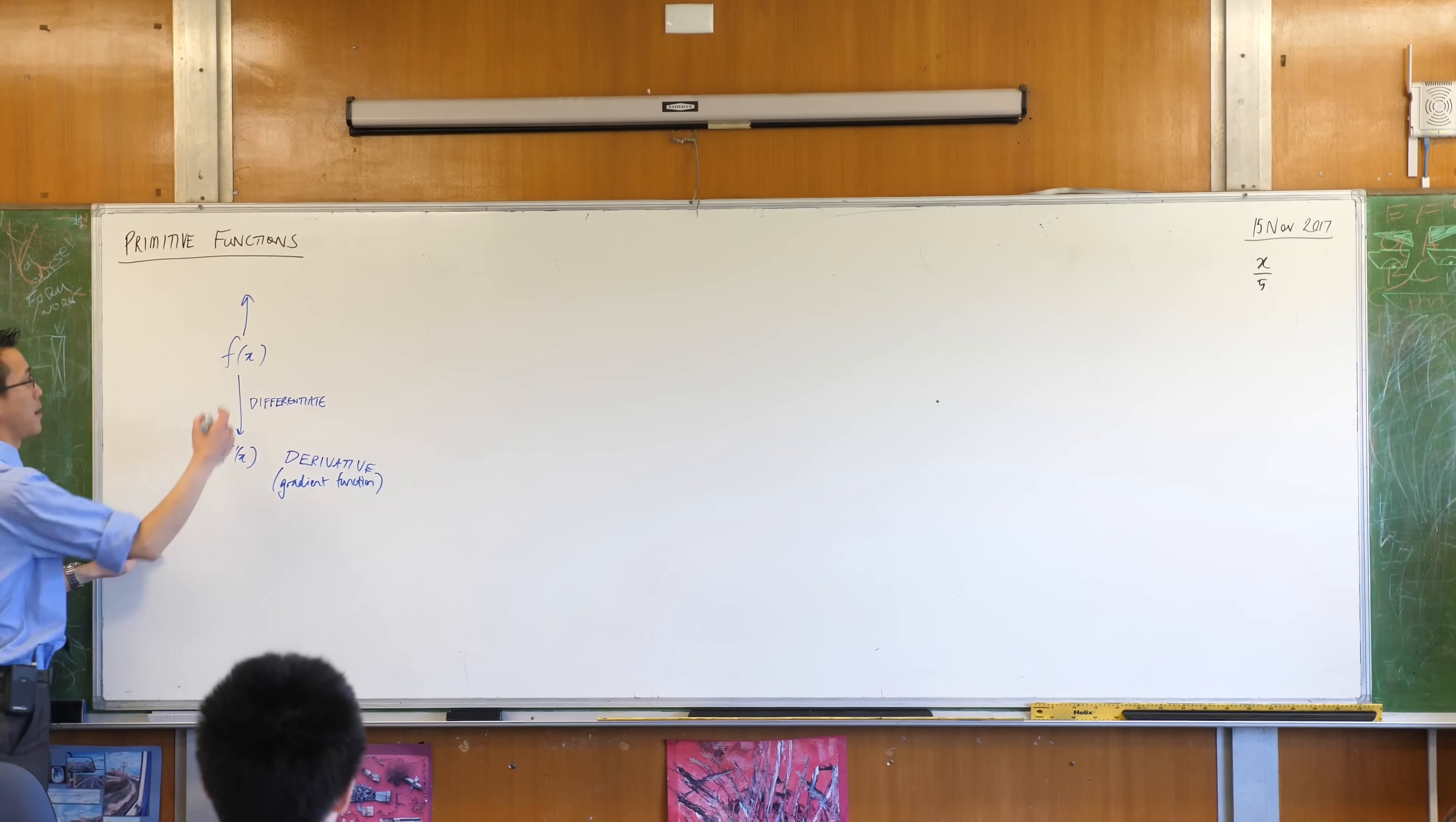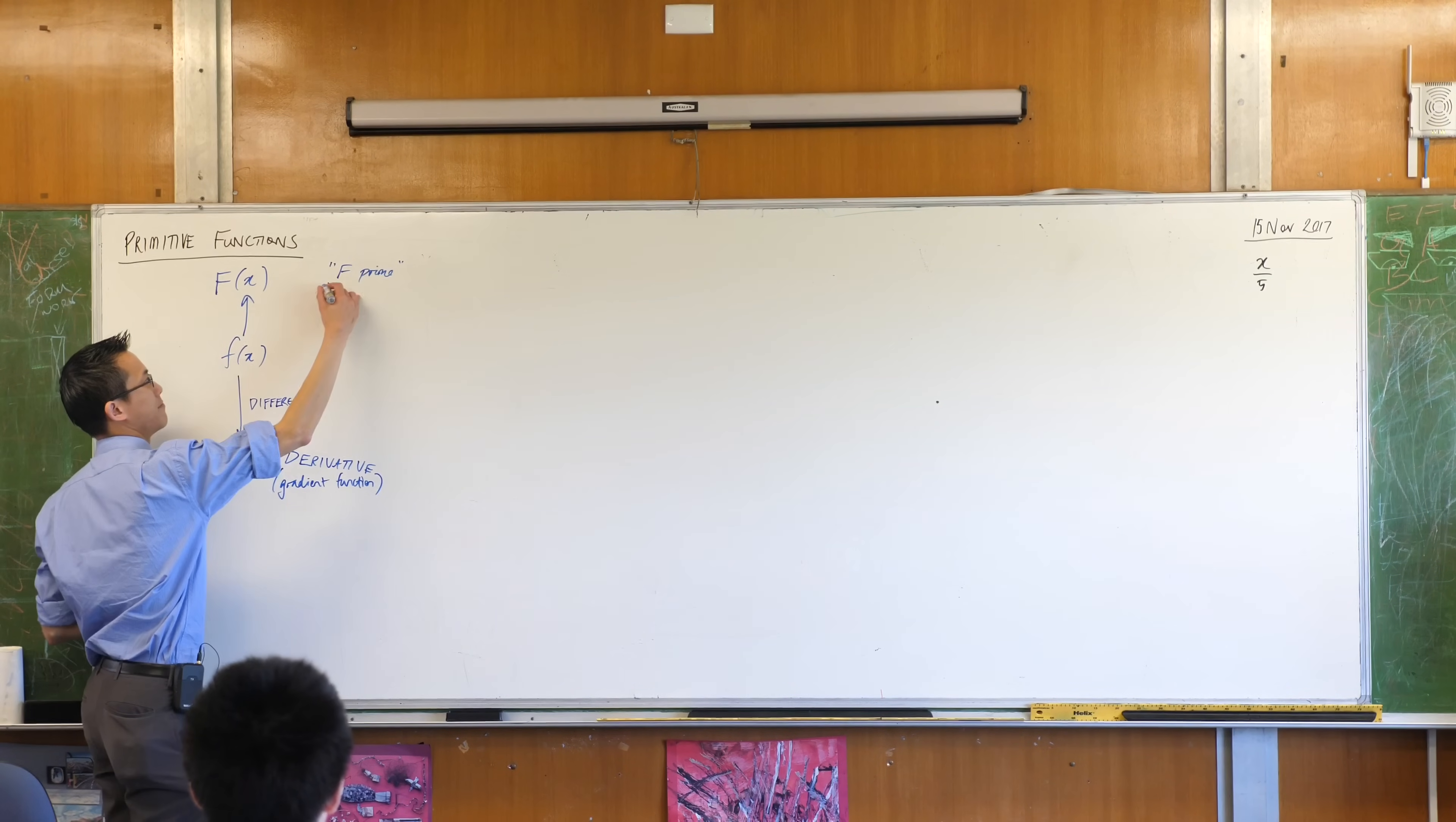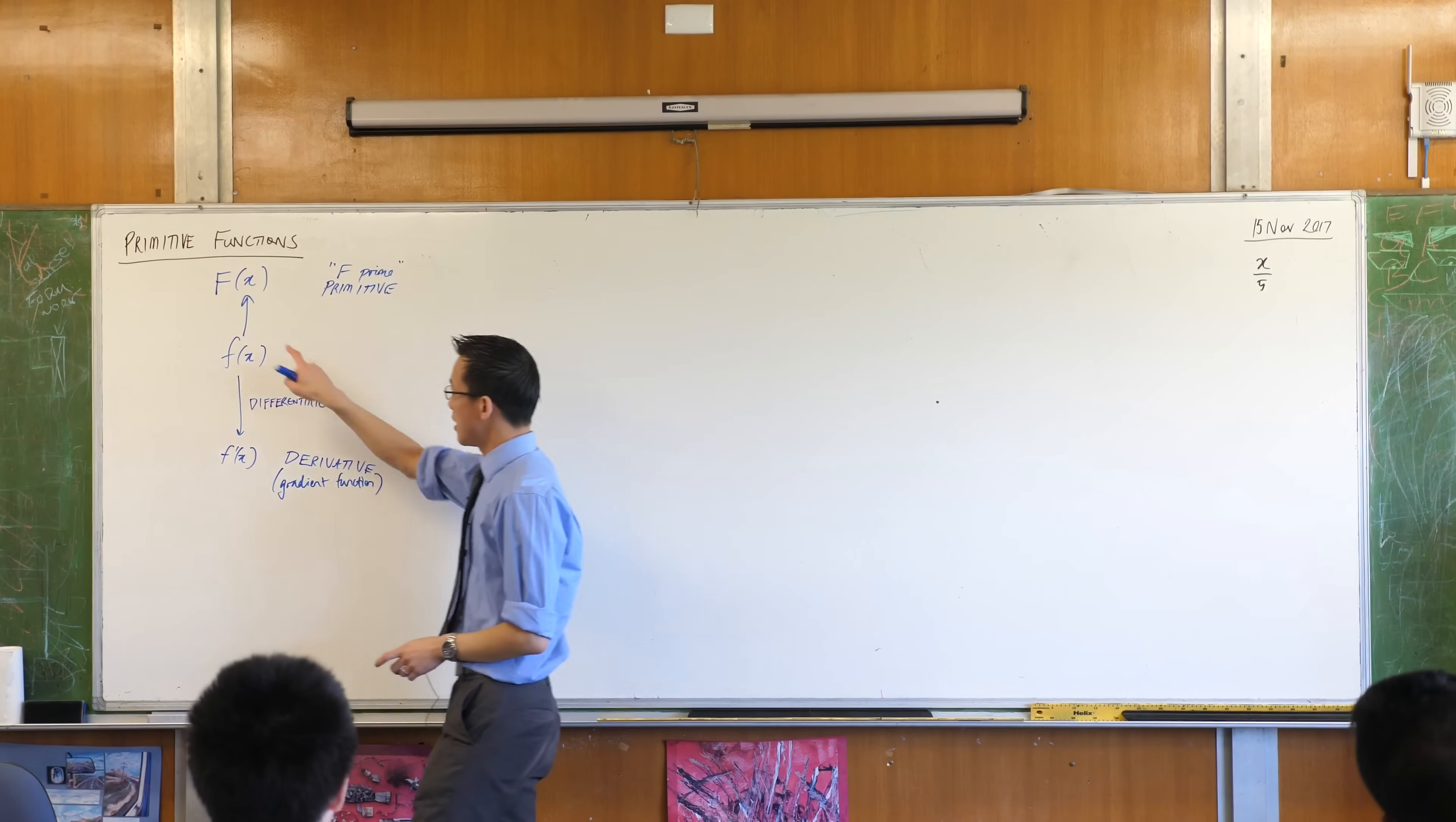There's a few different ways to annotate this, but the most common way in this scheme is with a capital F. You can read this in a couple of different ways. Like this is f dash. This is sometimes called f prime, but the most common name is that it's called the primitive function. Prime, primitive, you get the idea. You can see derivative means what do you get out of this? Primitive means where did you come from? Like primitive human species and that kind of thing.